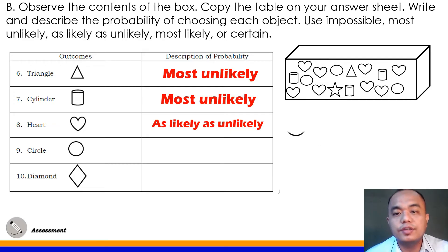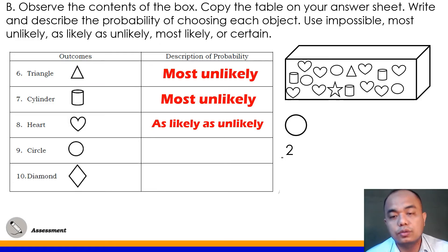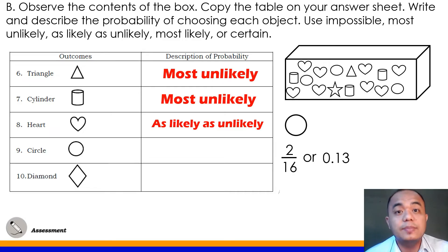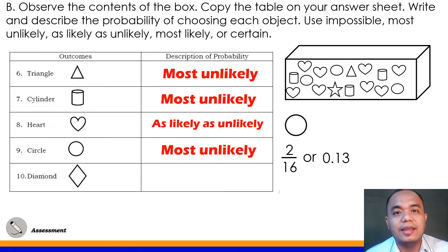Number 9: Circle. There are 2 circles inside the box, so 2 out of 16, which equals 0.13. Since 0.13 is near impossible on the scale, the answer for number 9 is most unlikely.